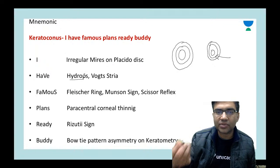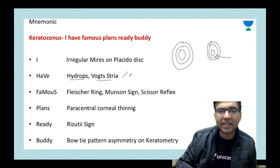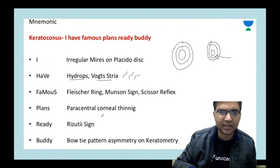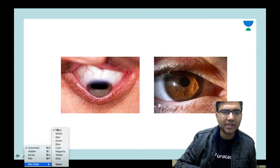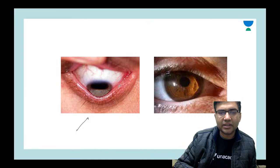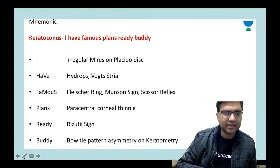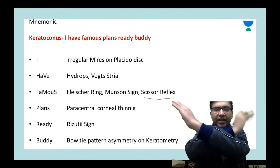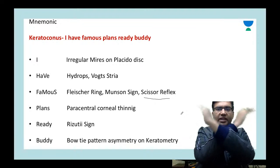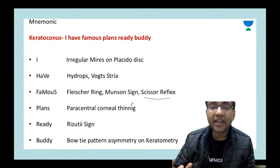Then 'H' goes with hydrops — aqueous percolation into the stroma. 'F' goes with vertical stria (Vogt's striae) which disappear on pressing with a thumb. 'F' also covers Fleischer ring, which is an iron deposition ring. 'M' is Munson's sign — bowing of the lower lid on downgaze. 'R' is scissor reflex: during retinoscopy you get a scissors-shaped reflex due to the irregular corneal surface.